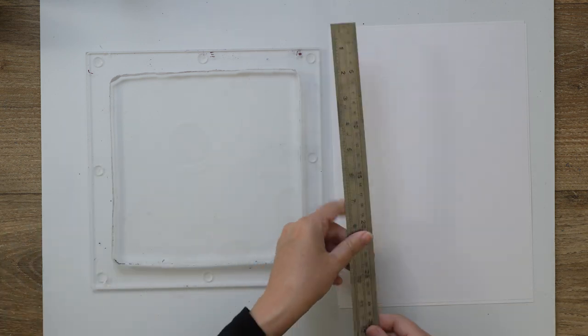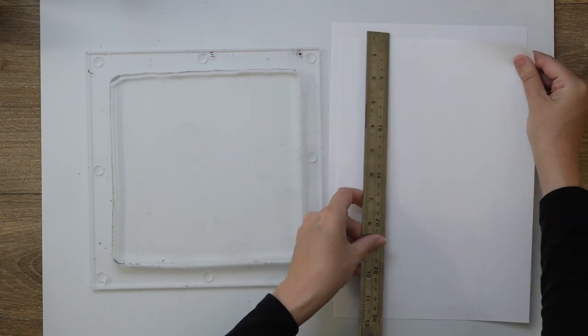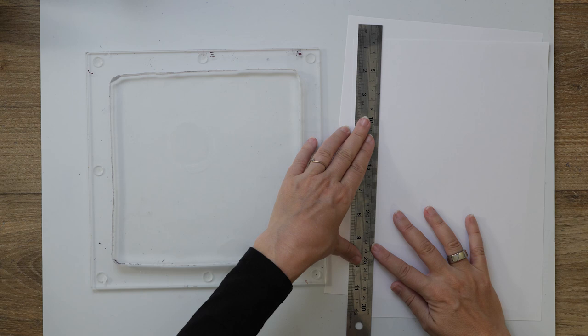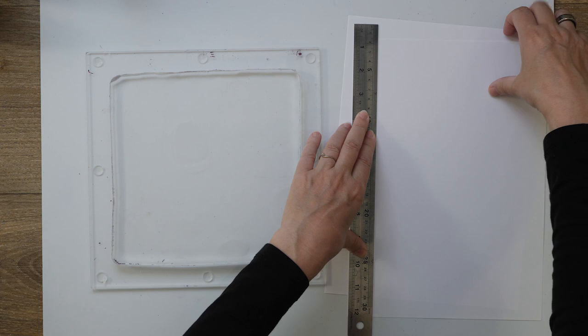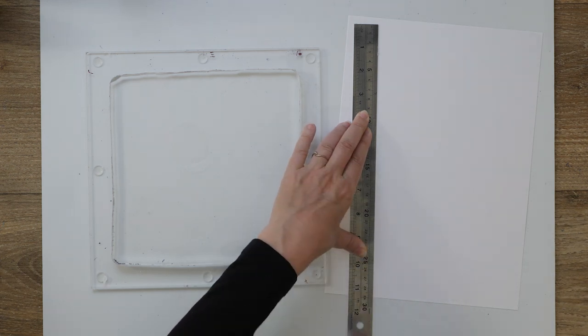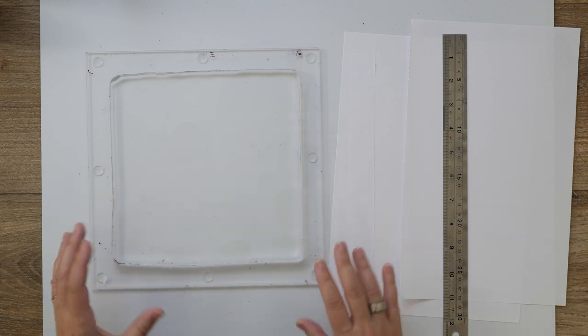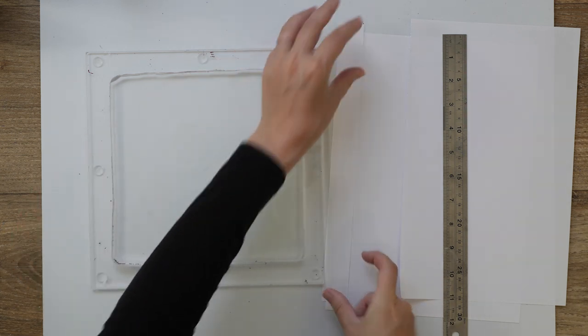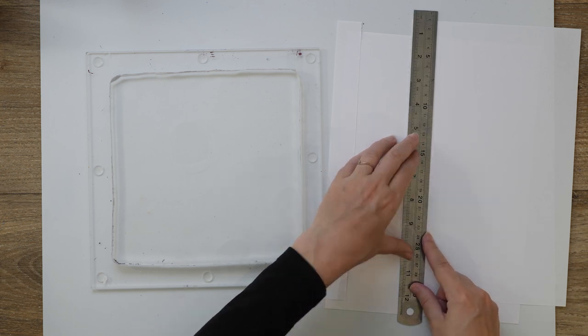So I have a ruler here and some simple printer paper. I'm just going to create some straight or straightish masks. If I would take my current mindset completely seriously I would measure this out, but I'm definitely not going to do that. Let me just create a few of these strips.